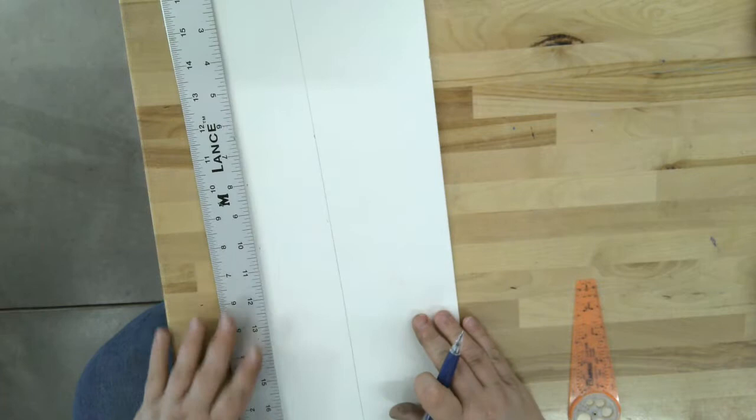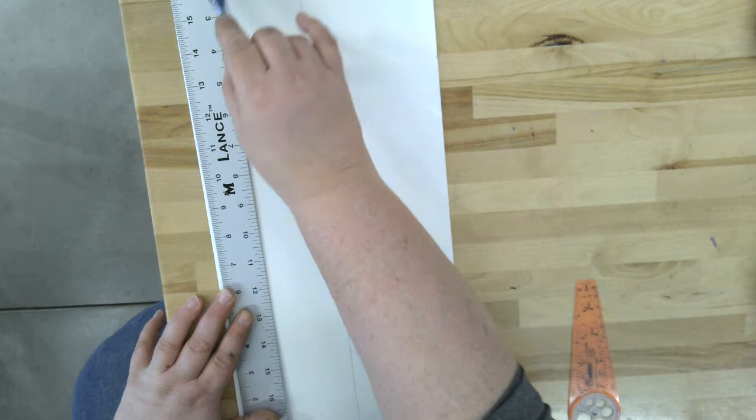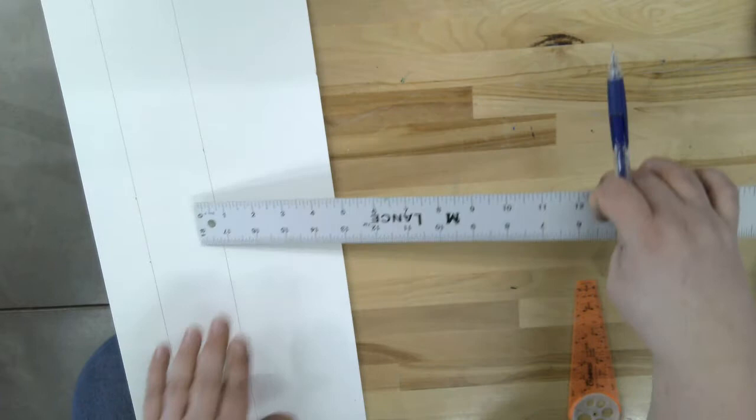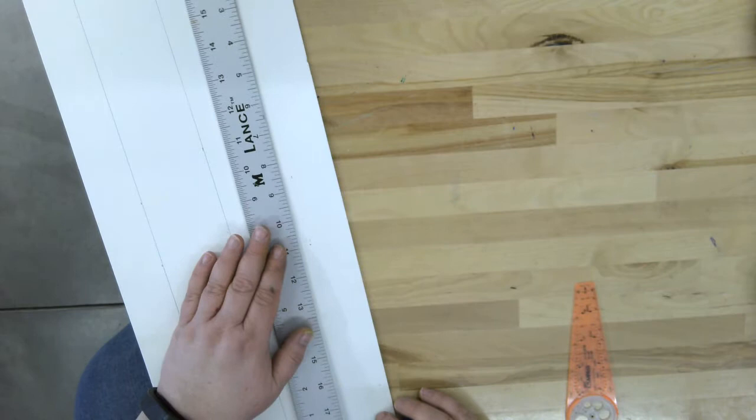So I'm going to go here and here. And then I'm going to line up those spots and make a line. And then from that center, I'm going to measure over two and a half inches again. Two spots. And make a line.